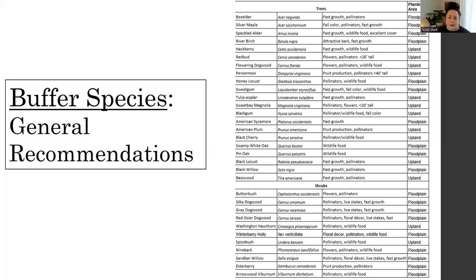Some more general recommendations are available here in a list — I can send this and make it available on the website with the recordings. It has the common name, the scientific name, and then what that species is good for, as well as whether you want to plant it in the floodplain directly next to the stream or further upland in your buffer. Trees are listed up top and shrubs down below — a great list of those buffer workhorse species, where they grow, and what benefit they can bring within your buffer.